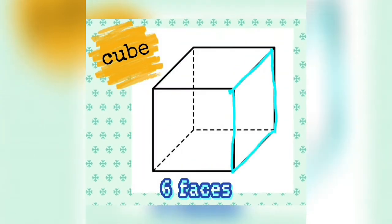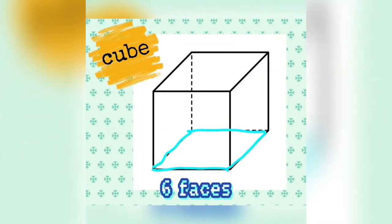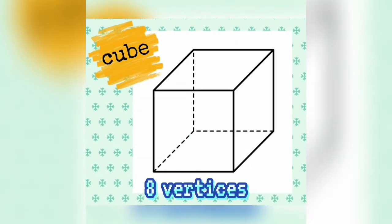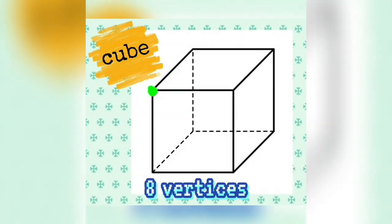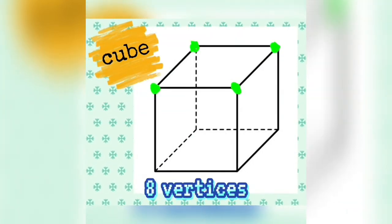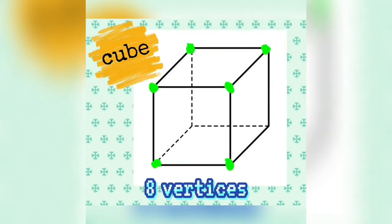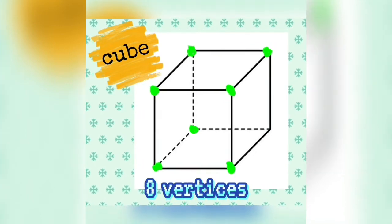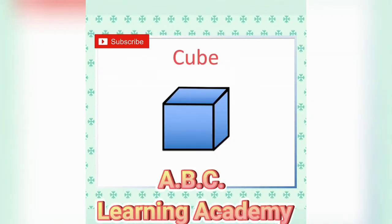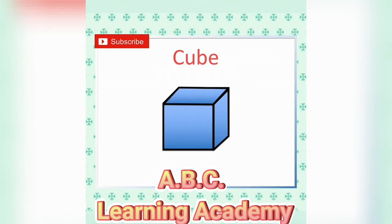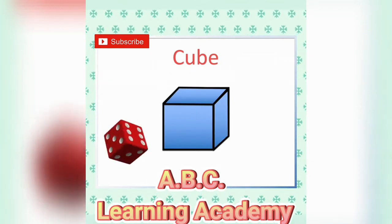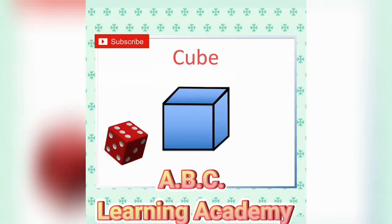Six faces — one, two, three, four, five, six. It has eight vertices — one, two, three, four, five, six, seven, eight. Examples of cube objects: Dice, Rubik's Cube, Ice Cube.